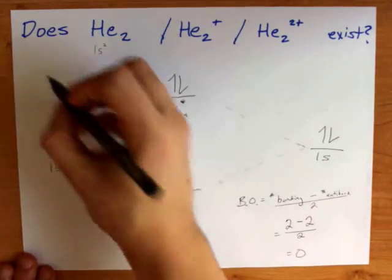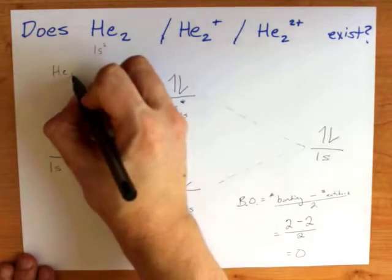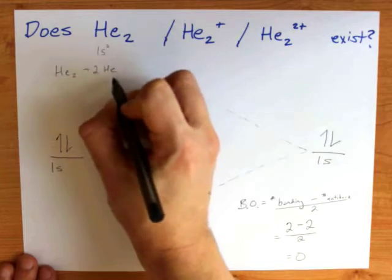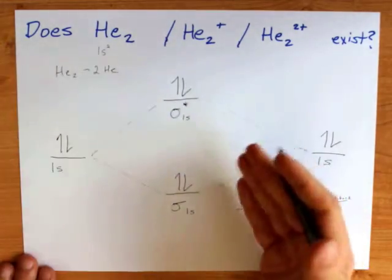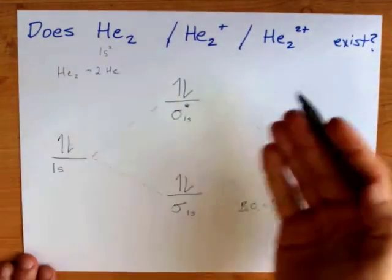In fact, it's probably pretty obvious that if you ever actually made He₂, it would just break apart to give you two He's, like the noble gases that we know helium is.